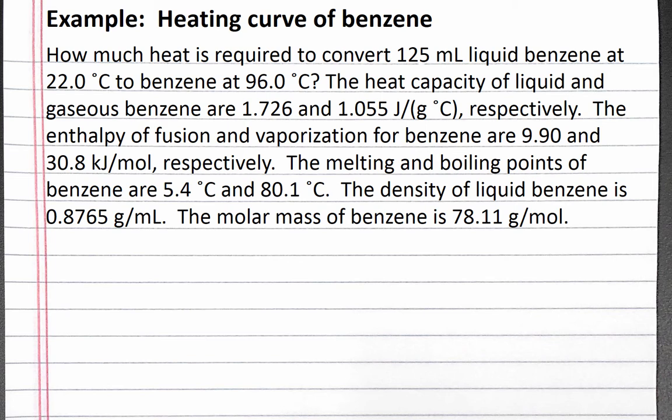The heat capacity of liquid and gaseous benzene are 1.726 and 1.055 joules per gram degrees Celsius, respectively. The enthalpy of fusion and vaporization for benzene are 9.90 and 30.8 kilojoules per mole, respectively.